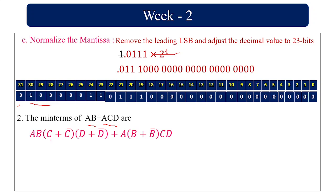Without altering the value of the equation, I have to include all 4 variables. For the AB term, I multiply by 1 into 1, replacing each 1 with (C plus C bar) and (D plus D bar). Since C plus C bar equals 1 and D plus D bar equals 1, multiplying by 1 does not change the value of AB.